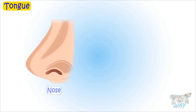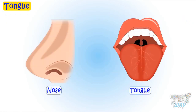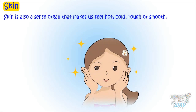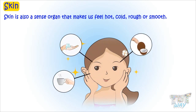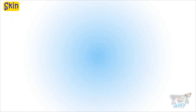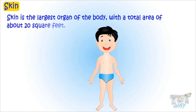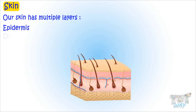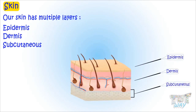We have learned about our nose and tongue. Now we will learn about another sense organ which is our skin. Our skin is another sense organ that makes us feel anything hot, cold, rough, or smooth. The skin is the largest organ of the body with a total area of about 20 square feet. Our skin has multiple layers: epidermis, dermis, and subcutaneous.